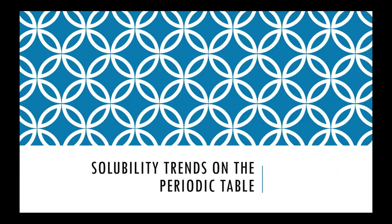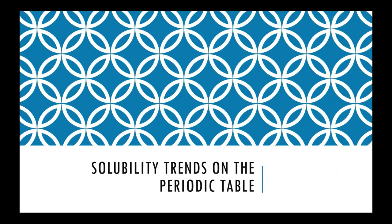Specifically, we'll be looking at the solubility trend within the periodic table for different metal ions. This experiment is one of the first ones where you're seeing a lot of different chemical reactions. The last experiment had the flame test with different colors, but this is an experiment where you're mixing two chemicals together and something happens.